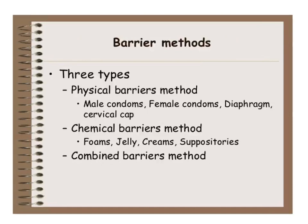Barrier methods mean you are not allowing the egg and the sperm to meet — you are putting up a barrier. Physical barriers include male condoms, female condoms, diaphragm, and cap. Chemical barriers are substances lethal to the sperm: foams, jellies, creams, and suppositories. Sometimes you can use both together to make it more effective — these are called combined barrier methods.